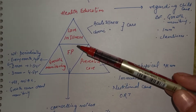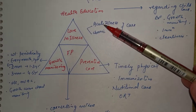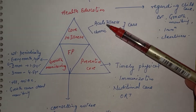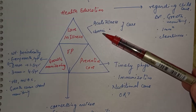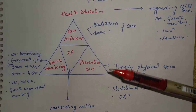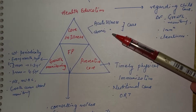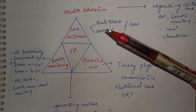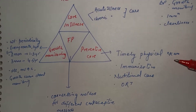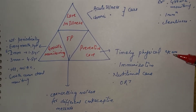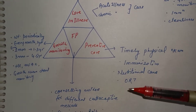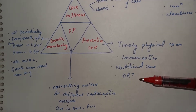Under care in illness, we manage acute illness or chronic illness. Preventive care for the child includes timely physical examination, immunization, nutritional care, and ORT — that is Oral Rehydration Therapy — to prevent diarrhea.